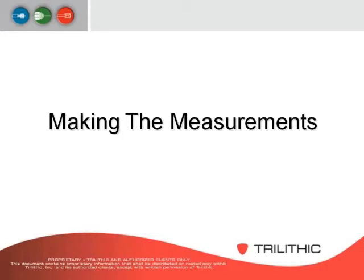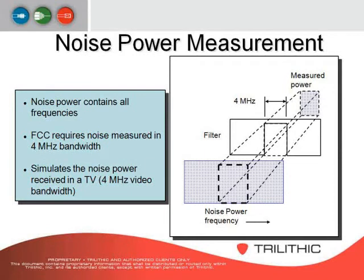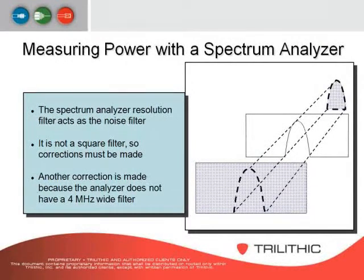Now let's talk about actually making analyzer measurements. When making noise power measurements, the noise power contains all of the frequencies. The FCC requires that the noise is measured in a 4 MHz bandwidth, which simulates the noise power received in a television. Up to 4 MHz is where your video information is, because your audio carrier picks up at 4.5 MHz below the video carrier. The spectrum analyzer resolution filter acts as the noise filter, but since it's not a square filter, corrections have to be made.